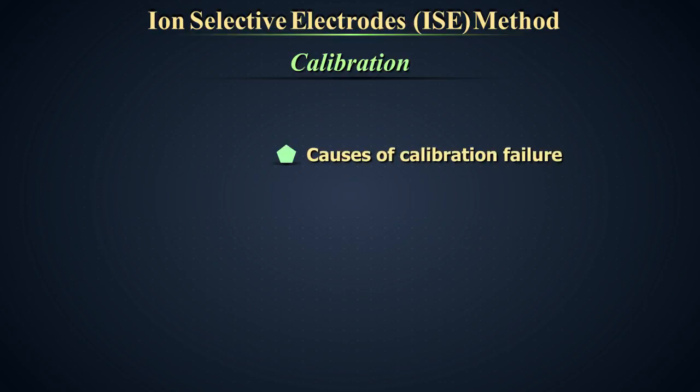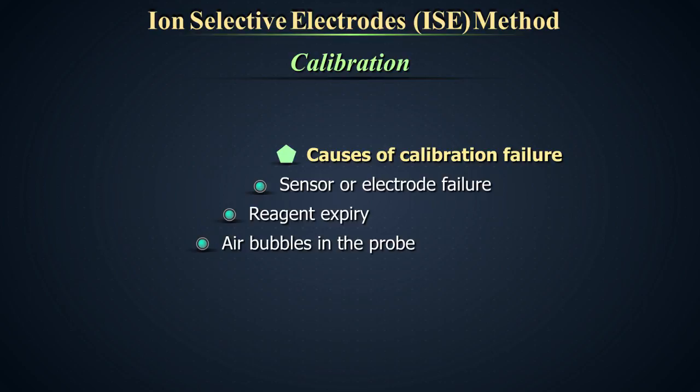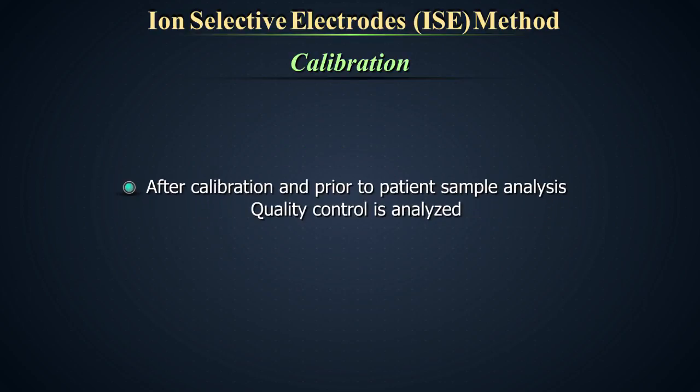Few causes of calibration failure are sensor or electrode failure, reagent expiry, air bubbles in the probe. After calibration and prior to patient sample analysis, quality control must be analyzed to establish the equipment's performance.